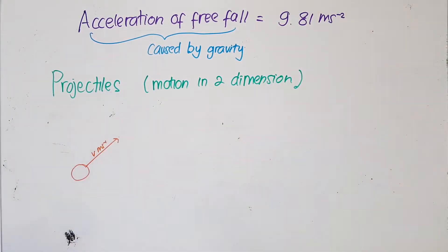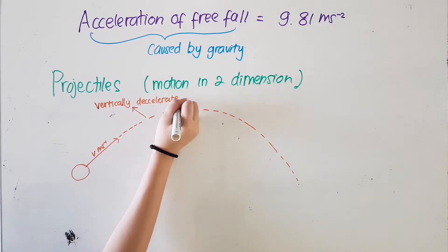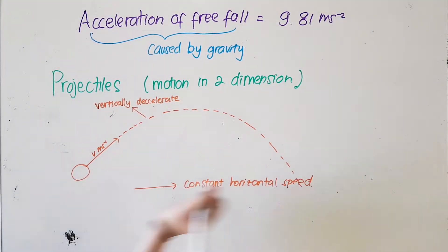When a ball is thrown at an angle theta to the horizontal, it has both vertical component velocity and horizontal component velocity. Assuming that there is no air friction, the ball decelerates vertically due to gravity but moves at constant speed horizontally.